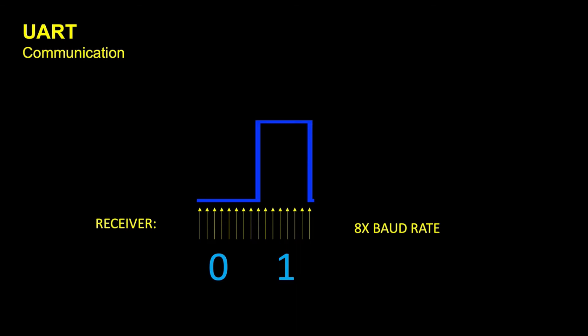Another important concept here is the baud rate and the sample rate. The receiver and transmitter have independent clocks, so we don't have a transmission line that synchronizes both. The receiver needs to know the baud rate in order to set its sample rate — usually using an oversampling approach, sometimes 8 times the baud rate, and sometimes even higher like 16 times.